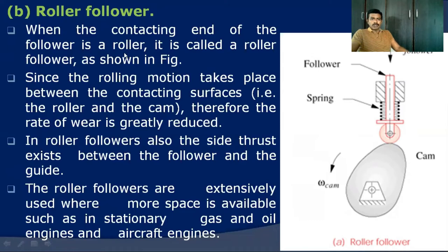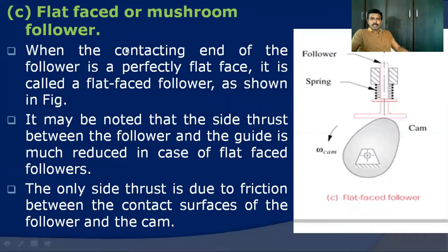When the contacting end of the follower is a roller, it is called a roller follower. Since rolling motion takes place between the contact surfaces, the rate of wear is greatly reduced compared with the knife-edged cam and follower. Roller followers are extensively used where more space is available, such as stationary gas and oil engines or aircraft engines. The main disadvantage of this roller follower is that side thrust exists, which is developed due to the rolling motion of the follower.